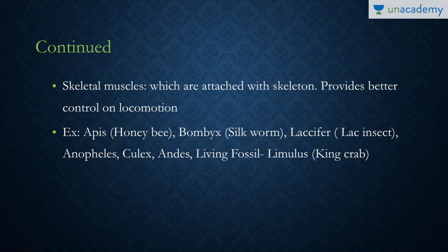Examples include Apis (the honeybee), Bombyx (the silkworm), and Laccifer (the lac insect) — all three are commercially important, giving us honey, silk, and lac respectively. Harmful examples include Anopheles, Culex, and Aedes, which are species of mosquitoes. There is also the living fossil, Limulus or the king crab, which has primitive features but belongs to the arthropods and hasn't changed in millions of years.